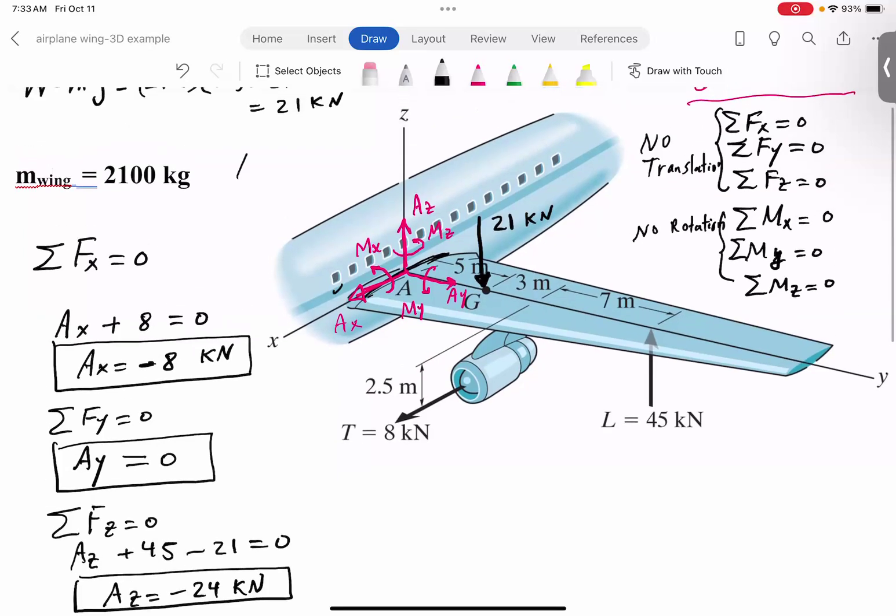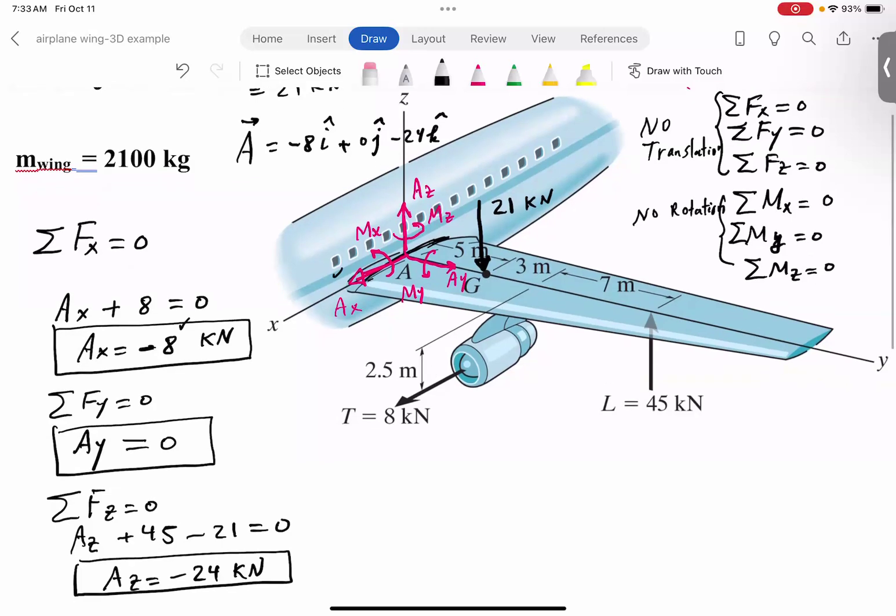So look, you could write your A, the forces that are developed in the Cartesian form. So minus 8i, that's the X component, zero j, you don't even have to write that, and minus 24k. And you can even find the magnitude of this, which would be a square root of negative 8 squared, zero squared, and negative 24 squared. If you want the resultant force reaction at that connection between the wing and the fuselage.